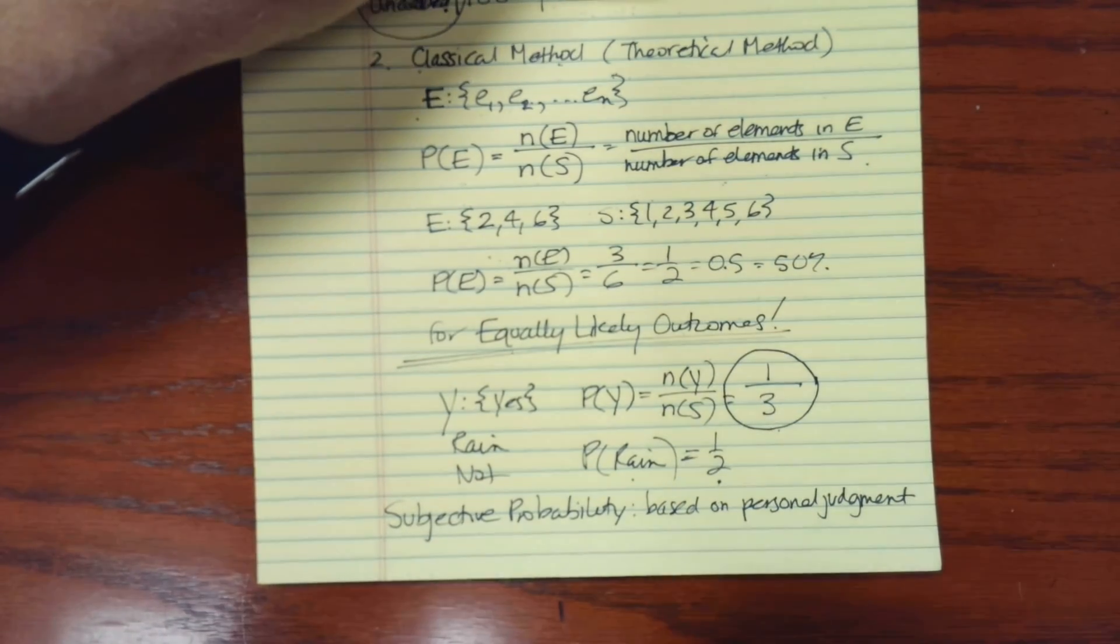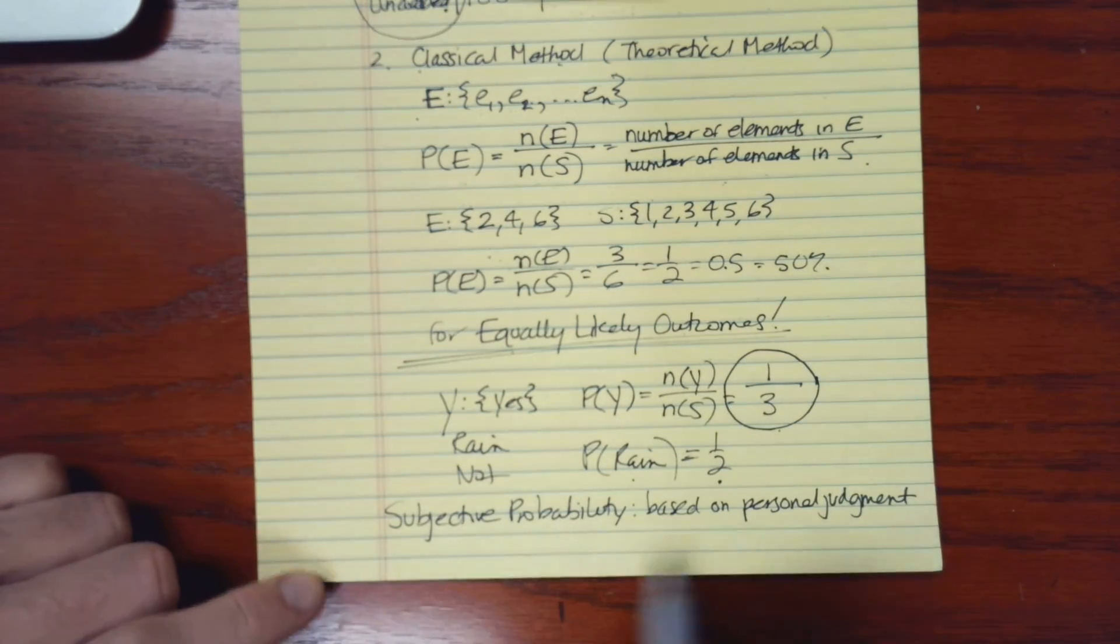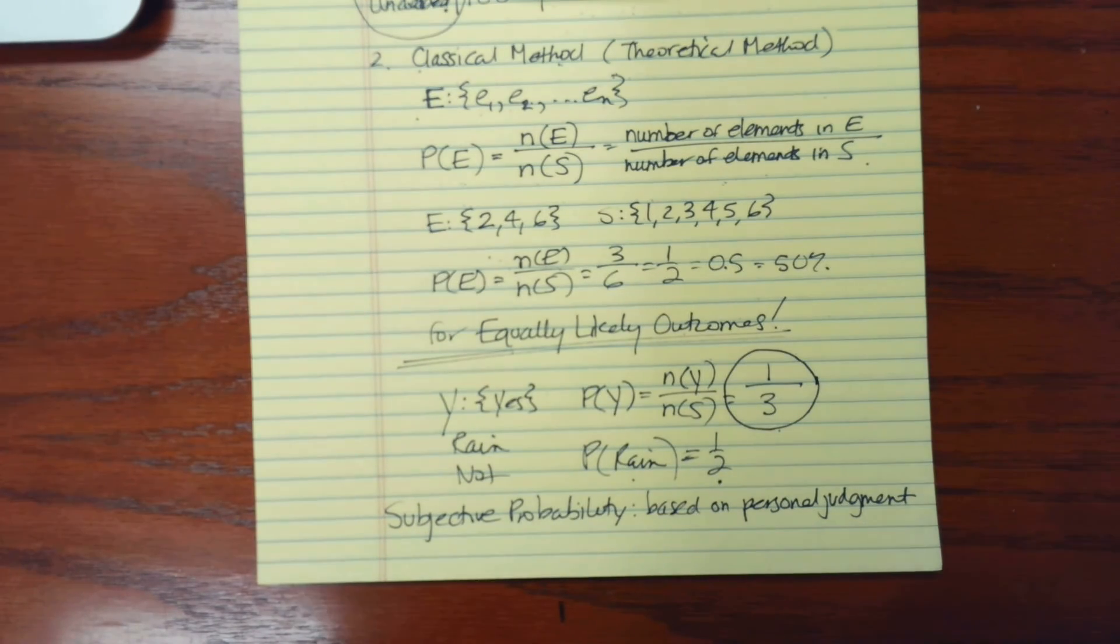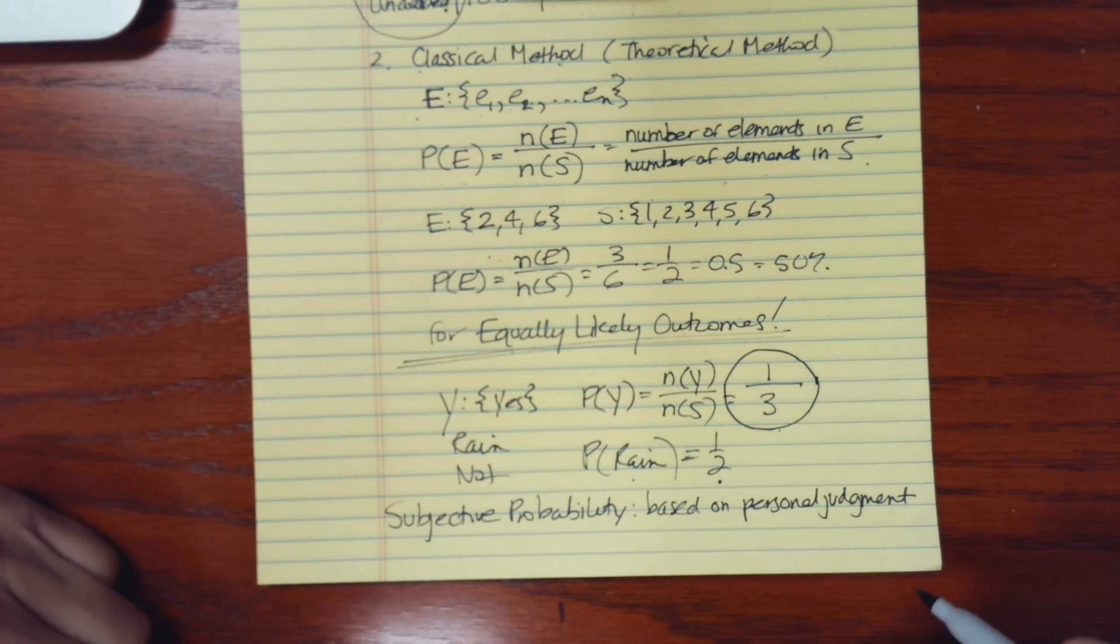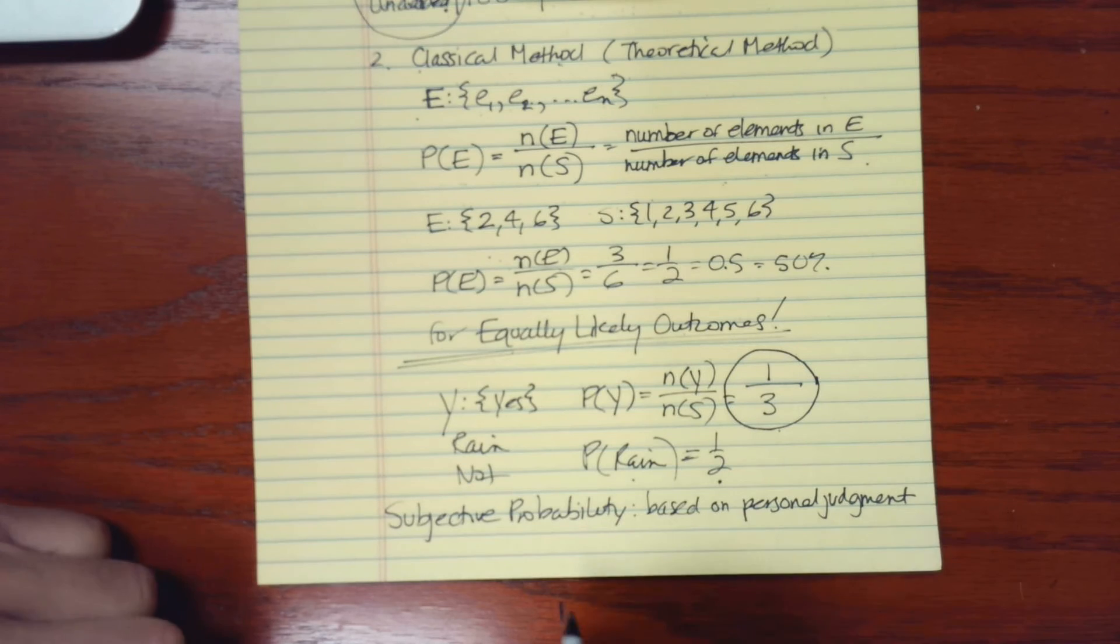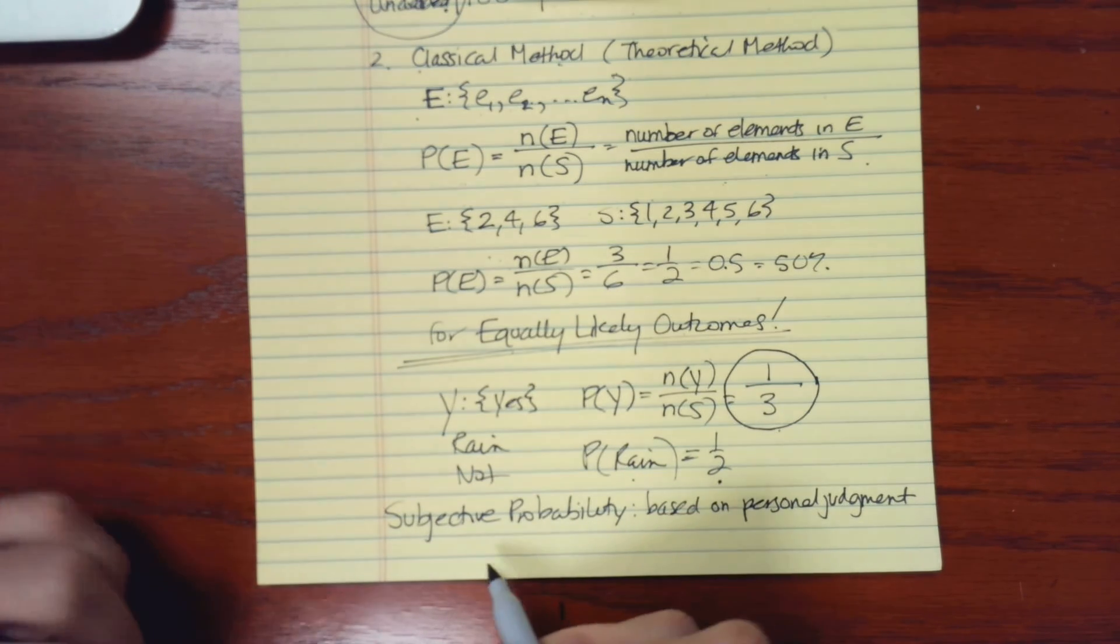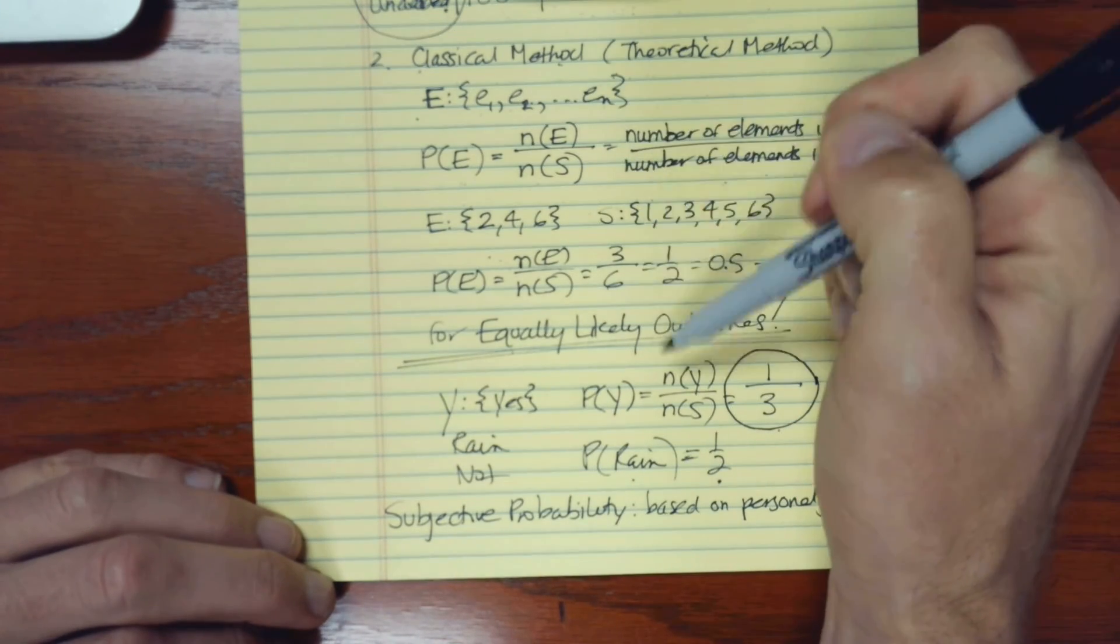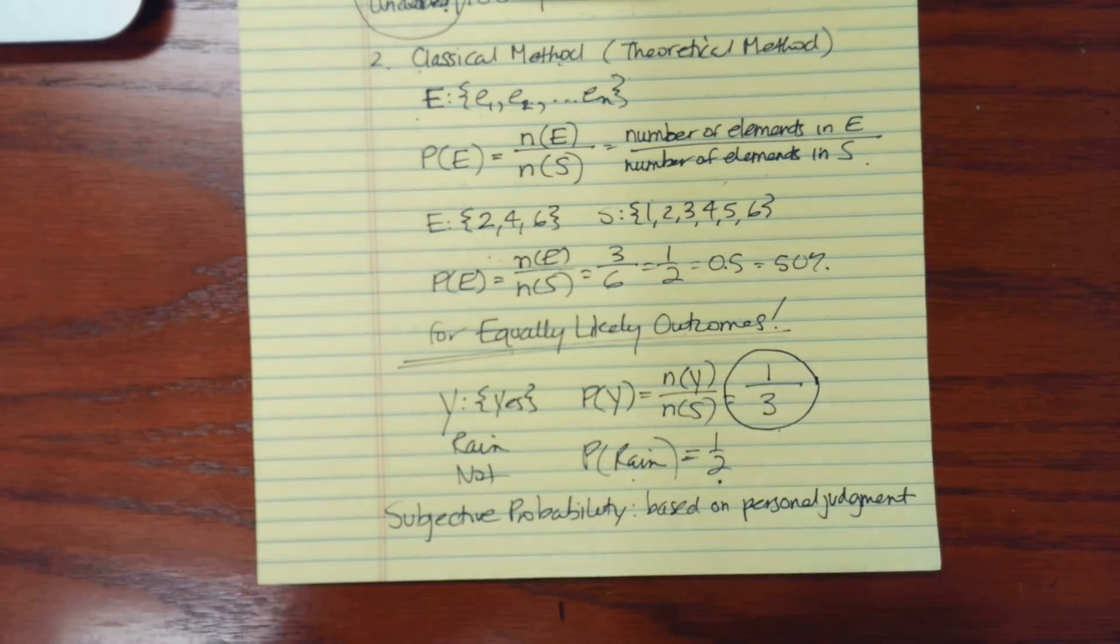For instance, if someone is making an estimate of the probability that a certain team will win in an upcoming match, then they may be analyzing a lot of data to come up with their likelihood that a certain team will win. But they're not using the classical method, which would always be they'll either win or lose, and so there will be a 50-50 chance.